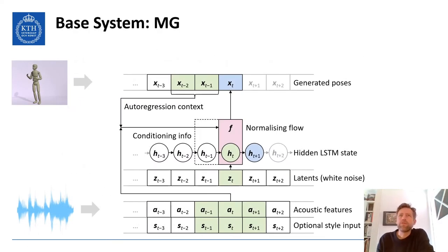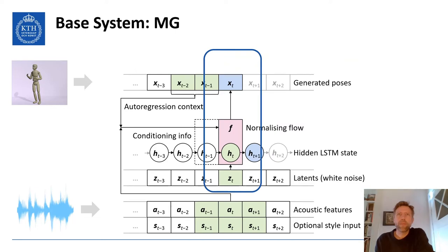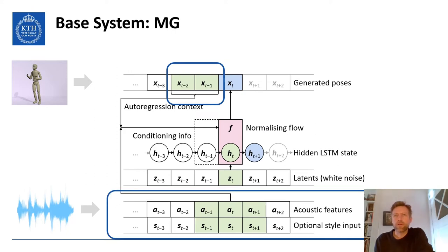Here is a figure of the Style Gestures system. Green elements are inputs and blue outputs. The idea is to treat motion as a stochastic sequence of poses and to model the probability distribution of the next step pose using normalizing flows. The probability distribution is conditioned on previous poses and an external control signal. In our case, this is the audio signal and the optional style control.